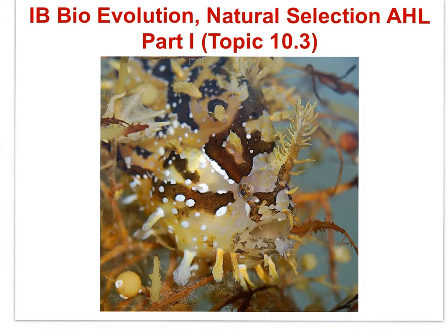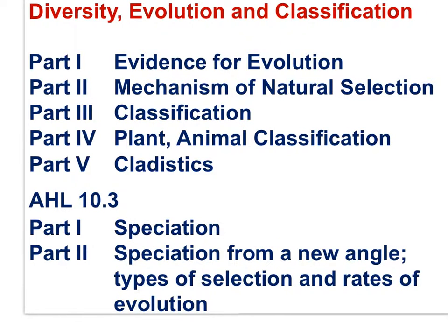In IB Bio Evolution Natural Selection Additional Higher Level Part 1, this is Topic 10.3. The focus will be speciation — how new species arise. The essential idea is gene pools change over time. Here is an outline of all the Evolution Natural Selection movies, the core and the additional higher level 10.3. Use this outline to find the movie you need. This movie is focused here.